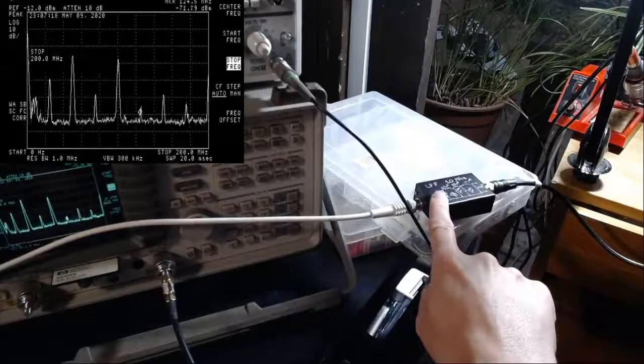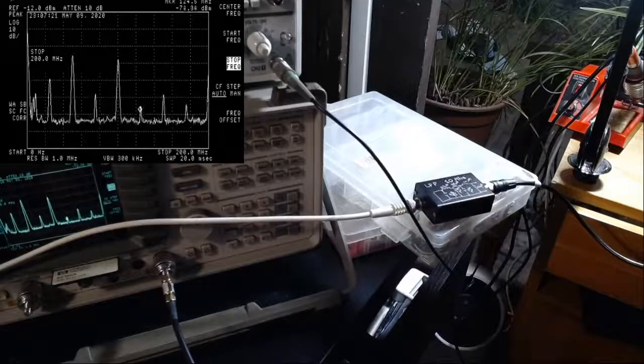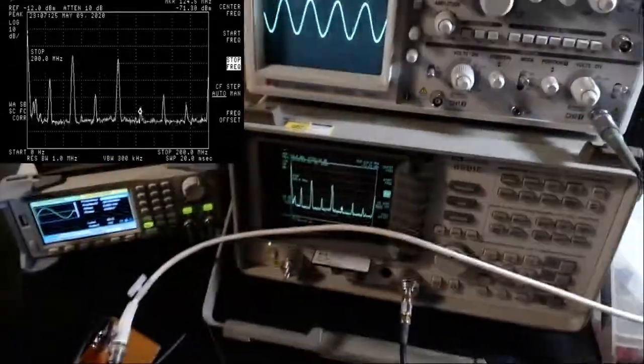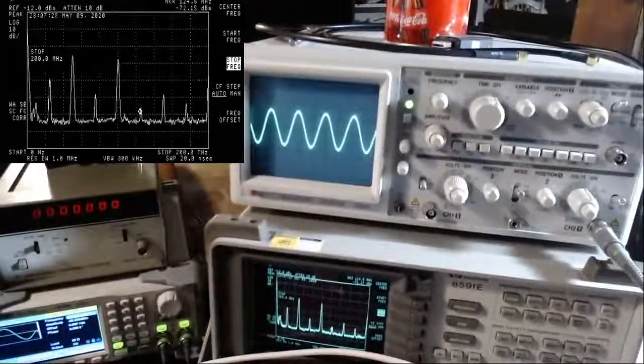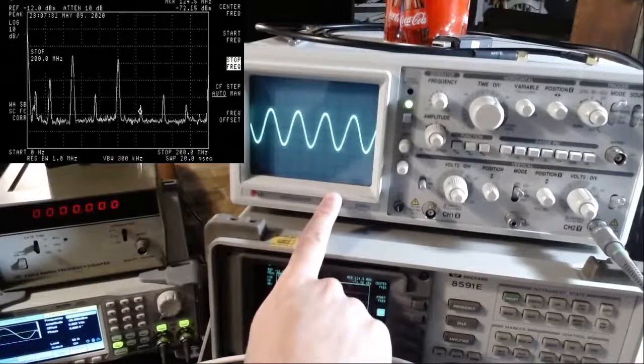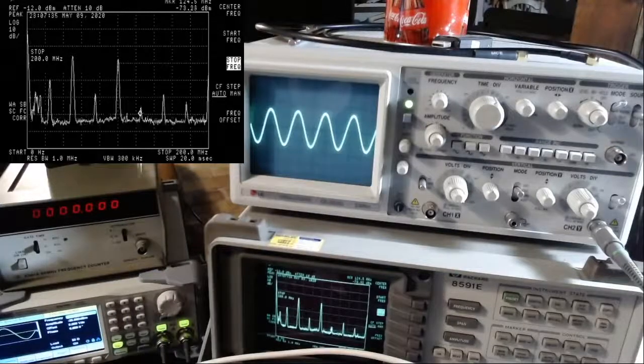This is blocking anything above 10 megahertz, going to the amplifier and going to the oscilloscope. As you can see here, the oscilloscope is showing me the 17 kilohertz.